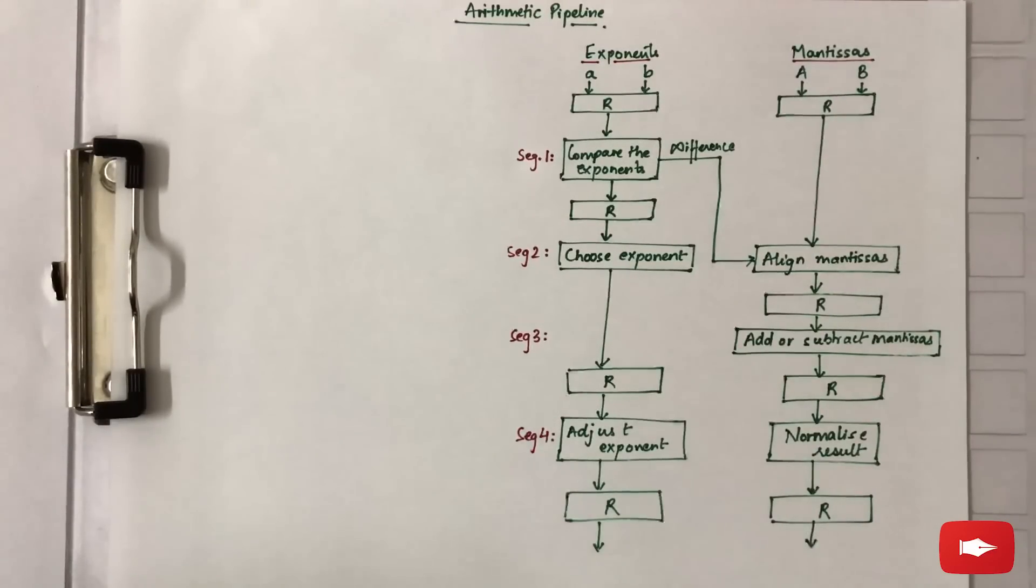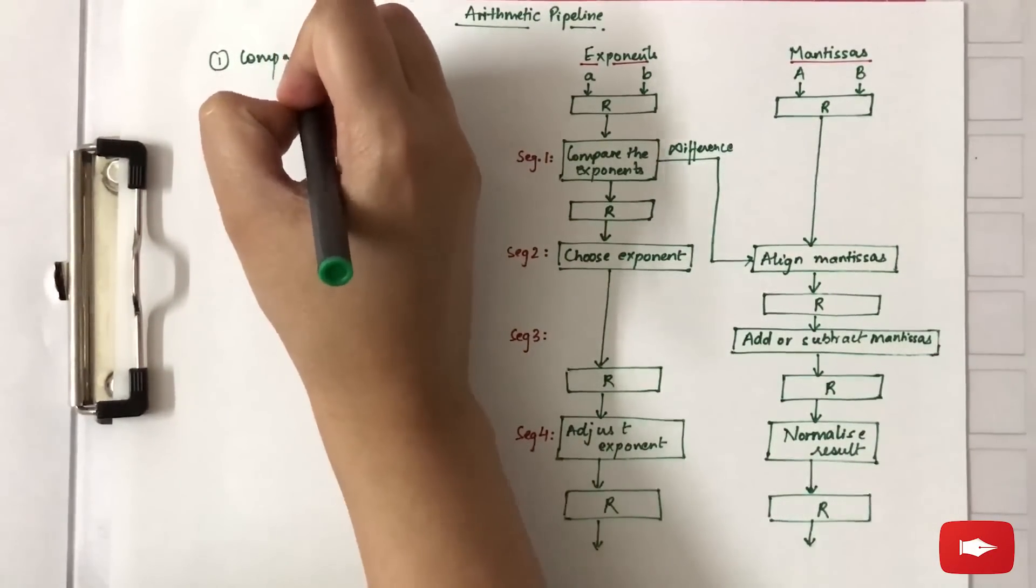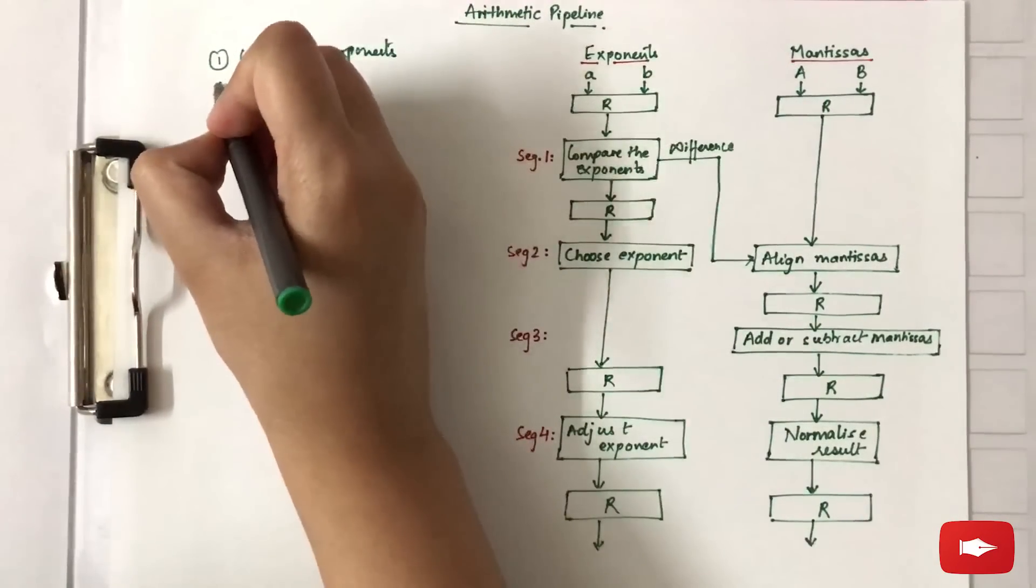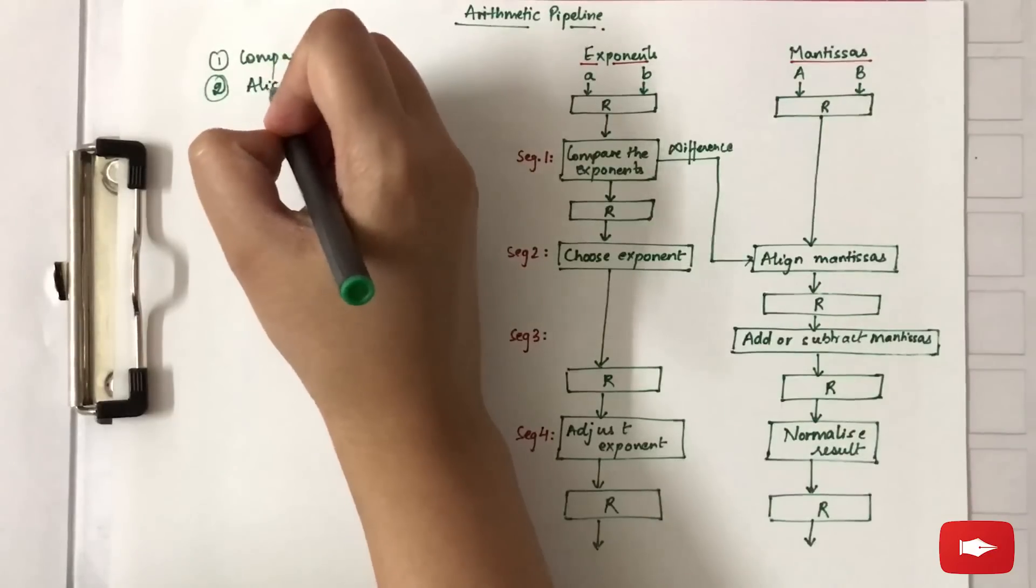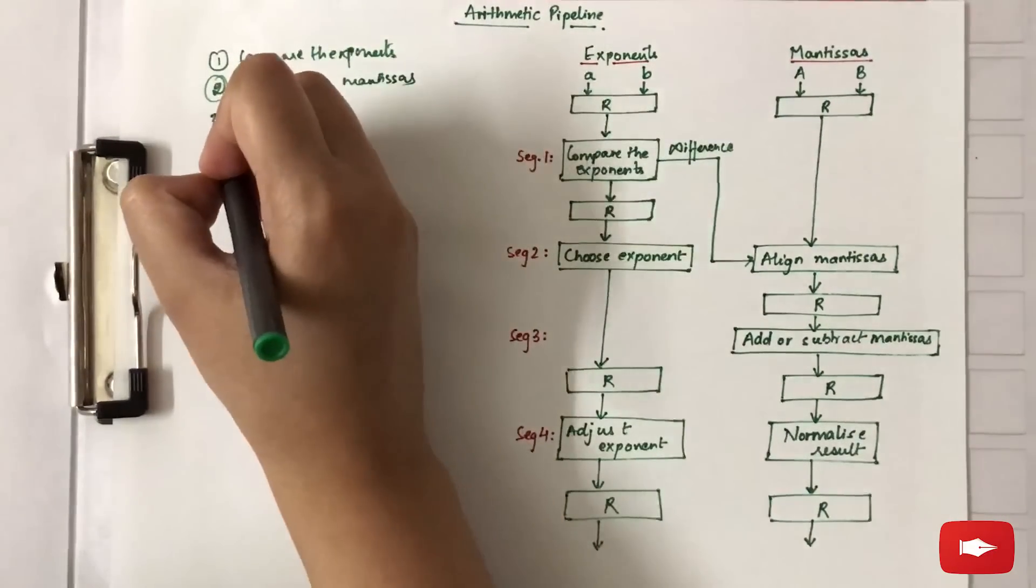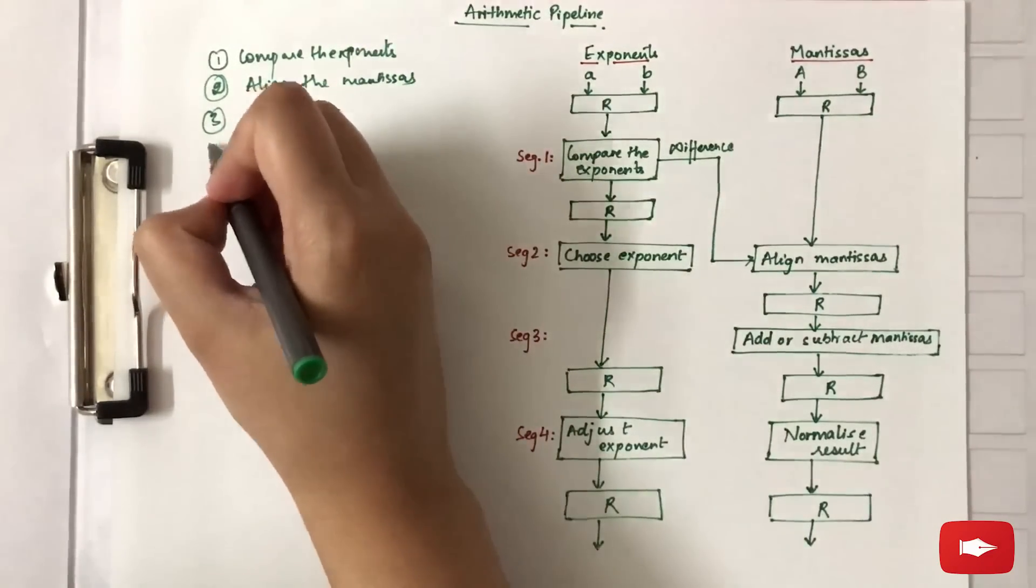To add or subtract two floating point numbers, what are the steps we follow? Though this problem can be solved in many ways, in general we follow four steps: first, we compare the exponents; second, we align the mantissas; third, we add or subtract them; and fourth, we normalize the result.